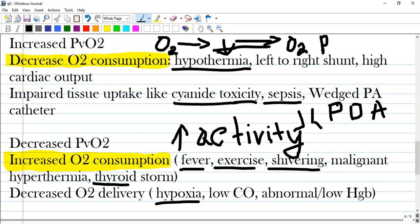And the second condition is decreased venous pressure of oxygen. So, oxygen consumption is too much by conditions like fever, exercise, shivering, malignant hyperthermia and thyroid storm. All of them increase activity of enzymes that produce ATP and energy. So, decreased O2 delivery, hypoxia, low cardiac output and abnormal or low hemoglobin.